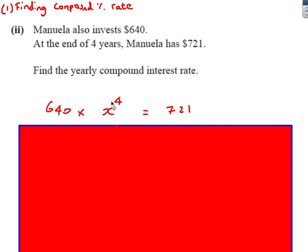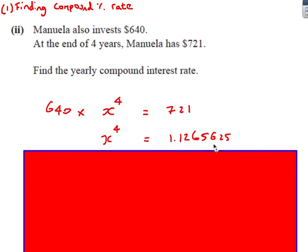So once I've got it set up like this, I just need to rearrange this. Step number one, get rid of the times by $640. So I get this stage here. I can't fourth root just yet on the first line unless I have fourth root $640 as well. So here we go. So I get X to the four equals this number here, 1.126. Okay, don't round it just yet.